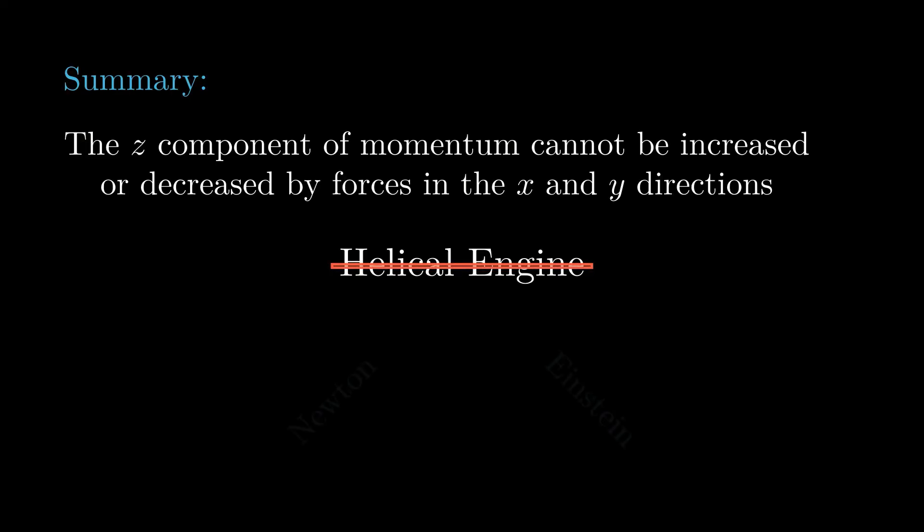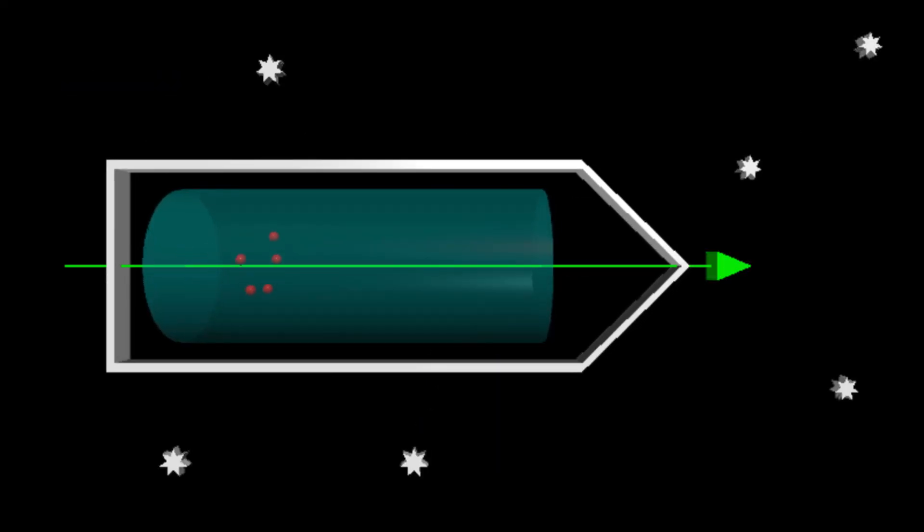The error is probably a common one, mixing results from Newtonian physics and special relativity in an inconsistent manner. David Burns assumed that, as in Newtonian physics, forces in the X and Y directions don't affect the Z component of velocity. But in relativity, this isn't true. So the helical engine won't work.